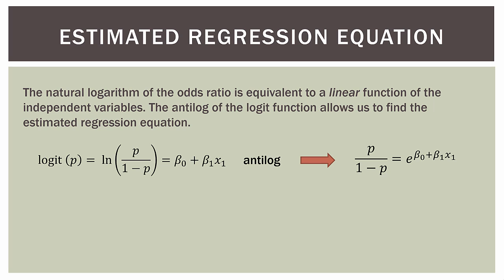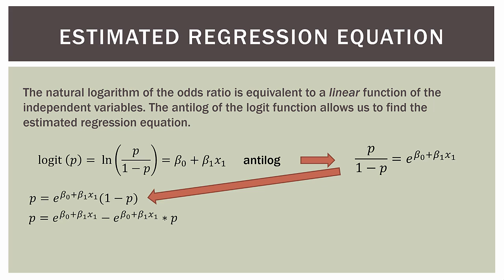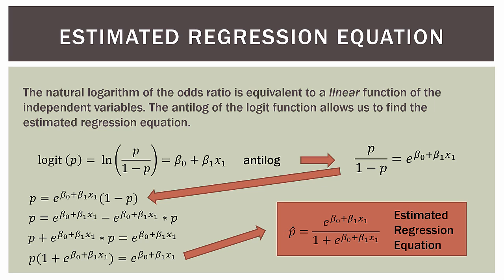Continuing to solve for p using algebra: swing one minus p to the right-hand side, then distribute to get e raised to the linear combination, minus e raised to the linear combination times p. Move the p term to the left-hand side, then factor out p. Swing everything in the parentheses to the right-hand side, and we arrive at the estimated regression equation for logistic regression: p-hat equals e raised to the linear combination of independent variables, divided by one plus e raised to the linear combination. When we get the coefficients back from our statistical software, we substitute them in and the equation gives us the estimated probability for any input values.